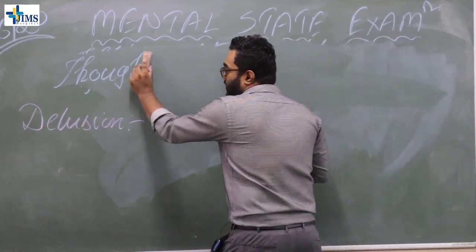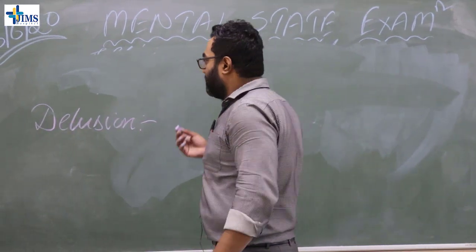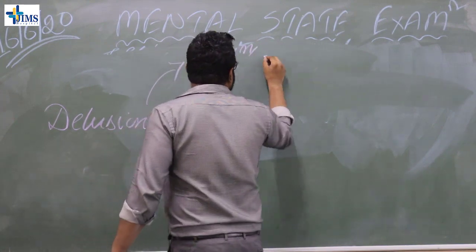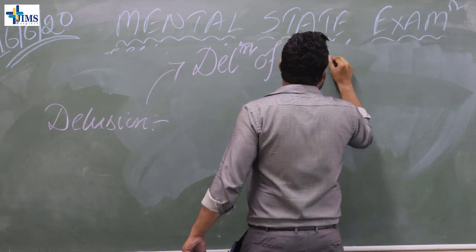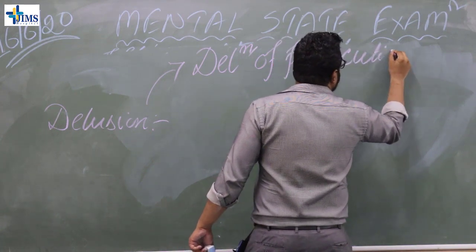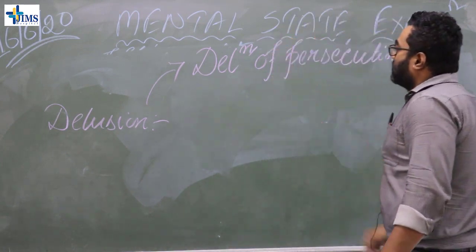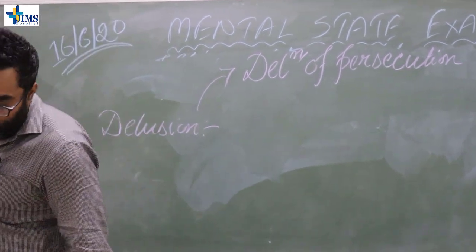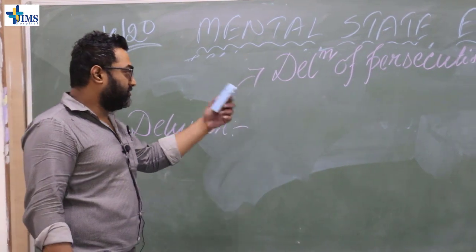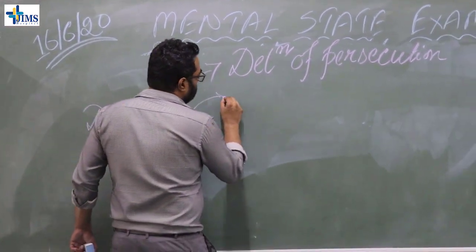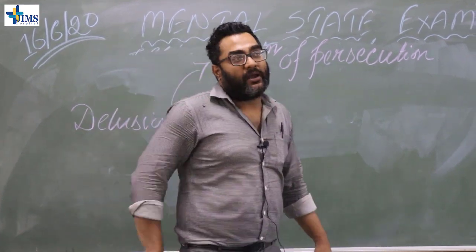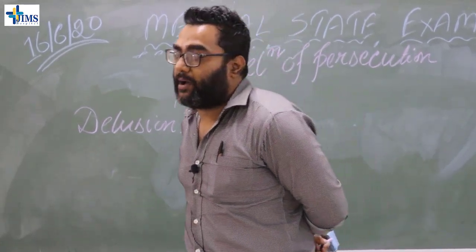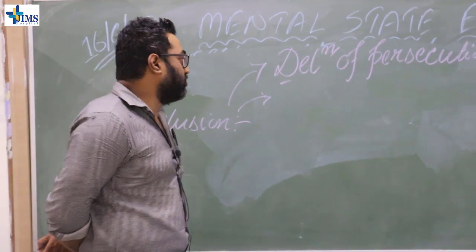Delusions are basically found in schizophrenic patients. There are many types of delusions; the most common is delusion of persecution. In delusion of persecution, the person complains that somebody or some people are trying to harm him or his loved ones.